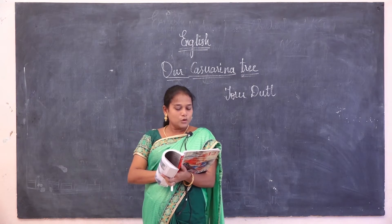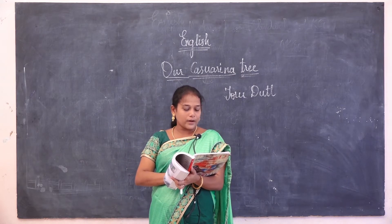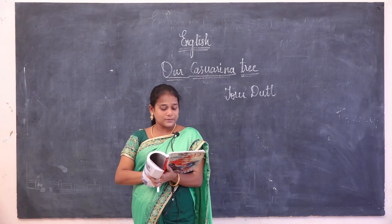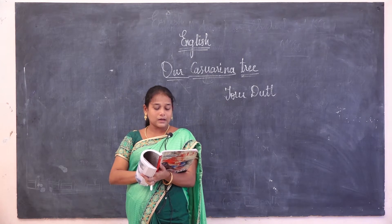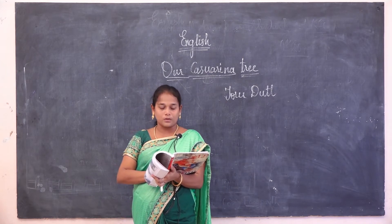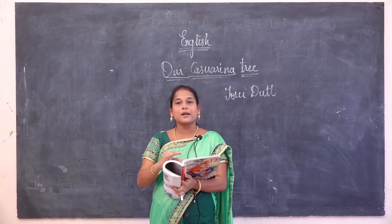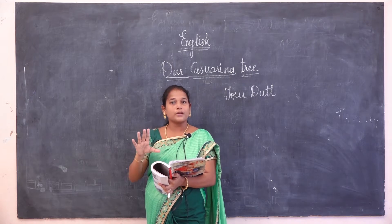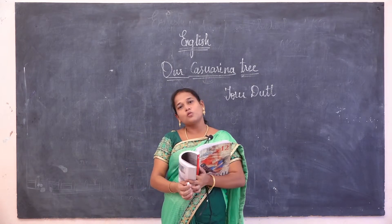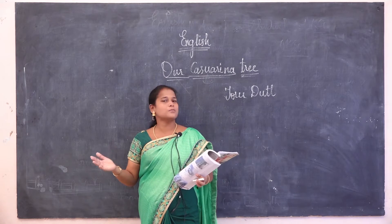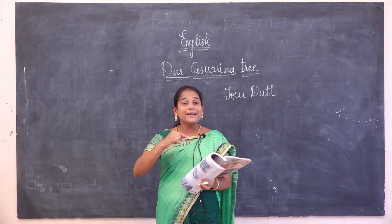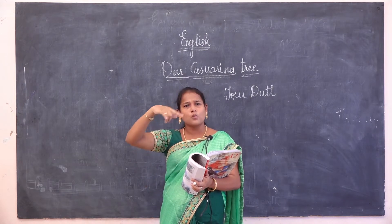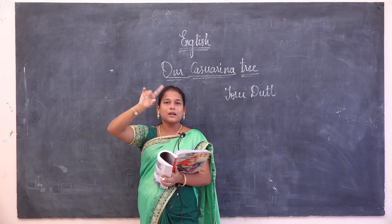The poem begins: 'Like a huge python winding round and round, the rugged trunk indent deep with scar, up to its very summit near the stars, a creeper climbs in those embrace bound.' In the first four lines, she explains the appearance of the tree. Like a huge python — python means a big snake — winding round and round, the creeper is climbing the tree round and round.